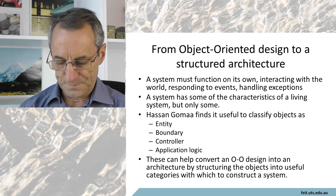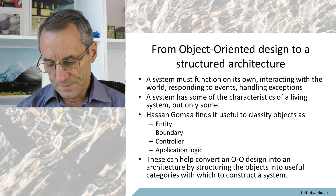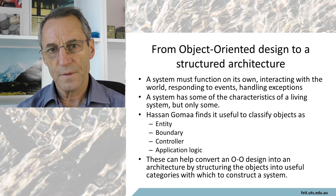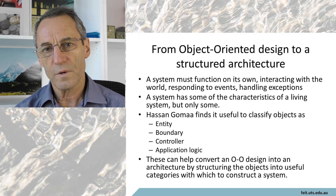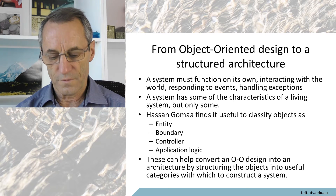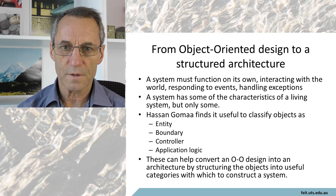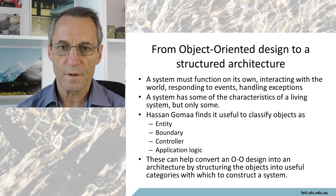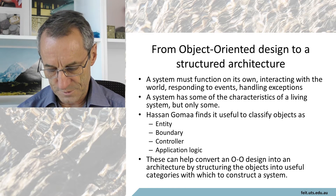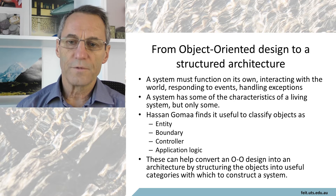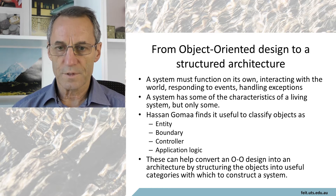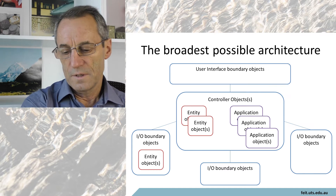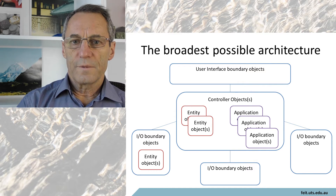Hassan Goma has a pretty good model where he classifies objects in terms of the entity object, the boundary object, the controller object, and the application logic object. These can convert an object-oriented design into an architecture at the first pass.